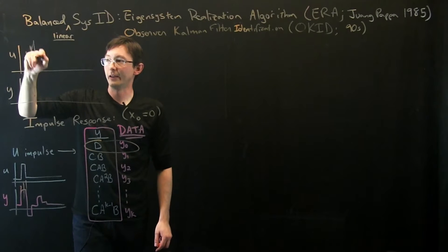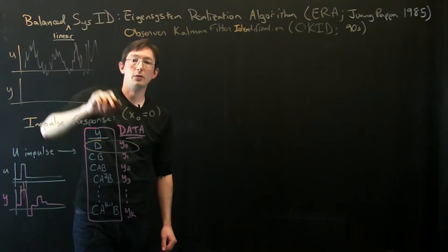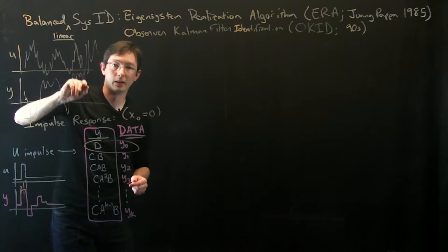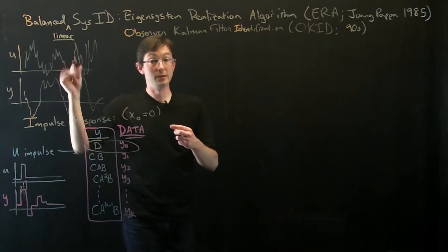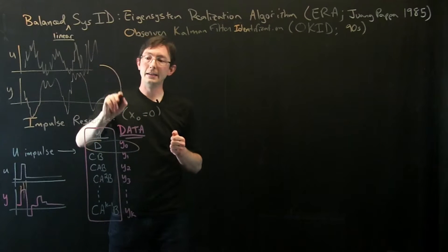So what OKID is, it takes kind of pseudo-random input-output data. Now I have maybe I can force my system with some kind of pseudo-random data and I get some corresponding output response in y, whatever u and y are. Pseudo-random input and then the system output.